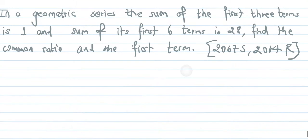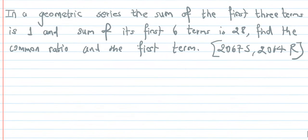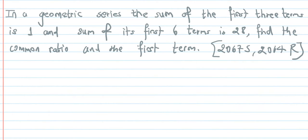In a Geometric Series, the Sum of the First 3 Terms is 1, and the Sum of the First 6 Terms is 28. We need to first find the common ratio.